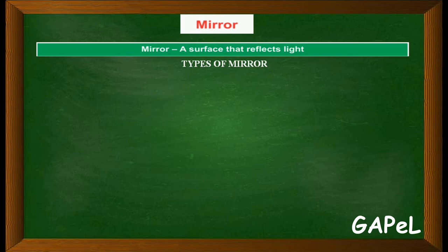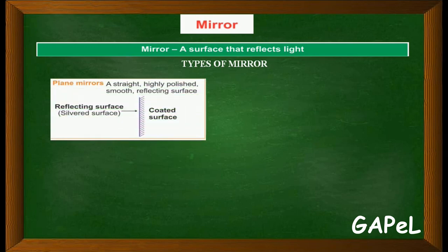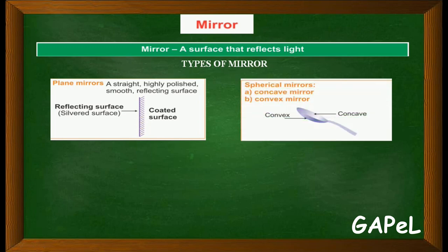So now there are types of mirrors. What are the different types of mirrors? You have plane mirror - a straight, highly polished, smooth reflecting surface. That is a coated surface. This is how you denote a mirror, this is how you are going to draw diagrams. The straight line - one side is the reflecting surface, whereas the other side with the line is the coated surface.